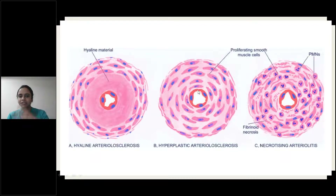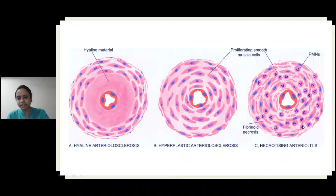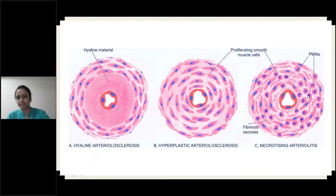Imagine you are seeing a cut-open onion — here you can see it like that. This is hyperplastic arteriosclerosis. And this is necrotizing arteriolitis: hyperplastic arteriosclerosis plus inflammation and necrosis — it's necrotizing arteriolitis.